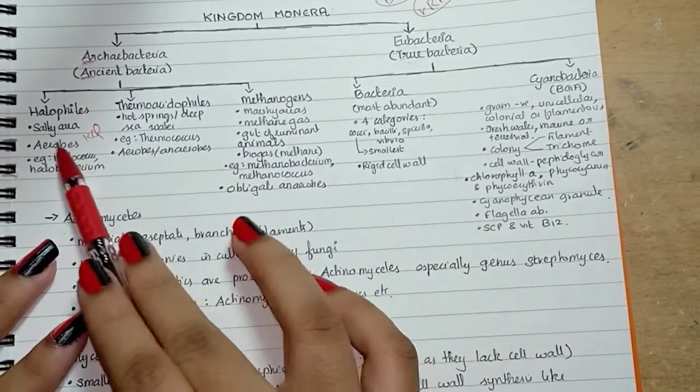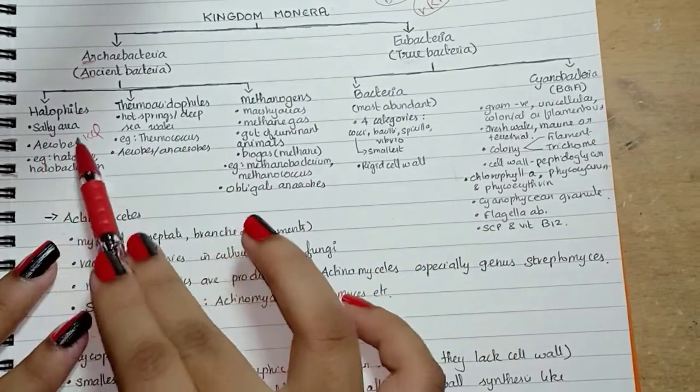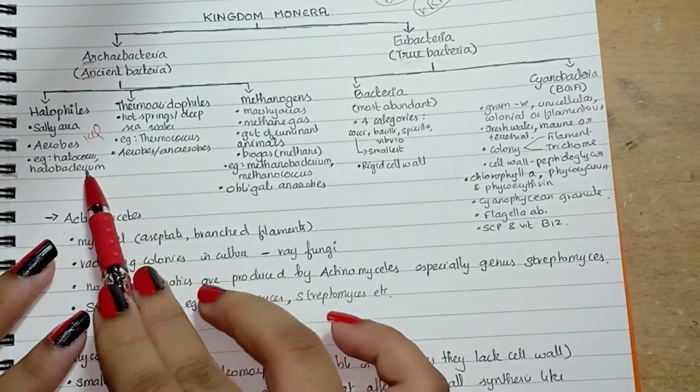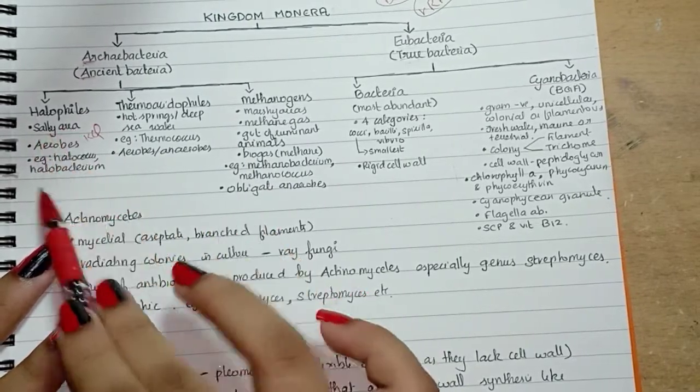Halophiles are aerobes. Examples of halophiles are halococcus and halobacterium — just as the names suggest.